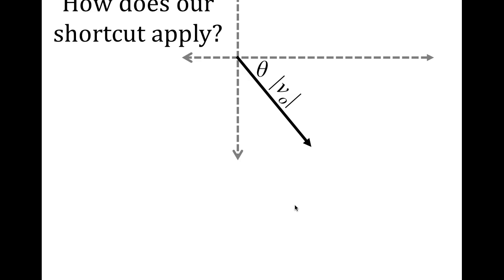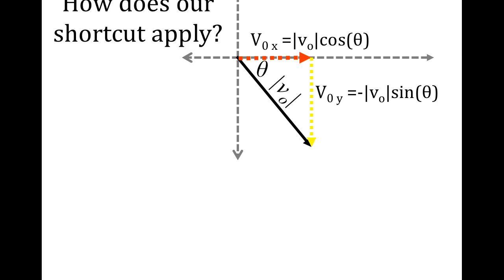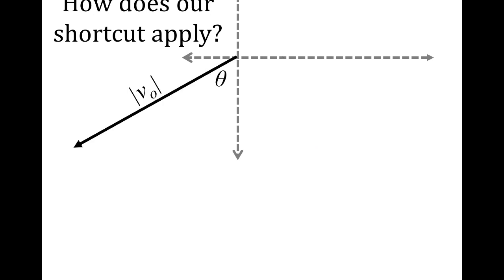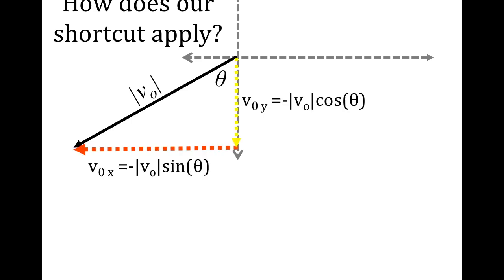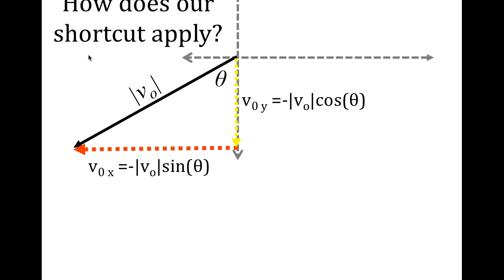Let's try a few more. Pause the video and calculate on your own. Here: x uses cosine and y uses sine; y is negative because it's going down. In another example, x is negative and uses sine because it's the opposite side going left; y is negative and uses cosine because it's the adjacent side going down. Note: you could also choose the other angle — your answer is still correct, just the sines and cosines swap.